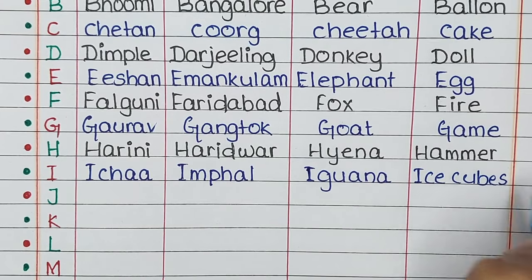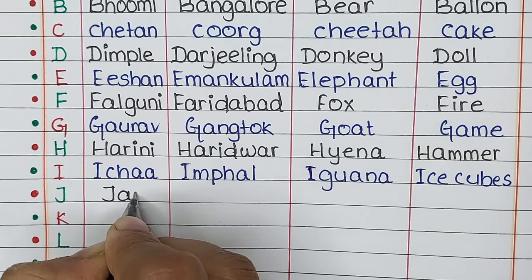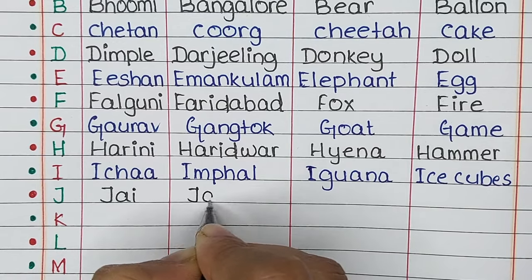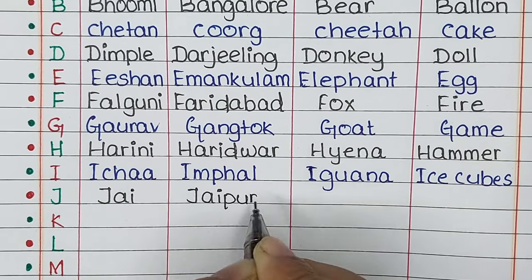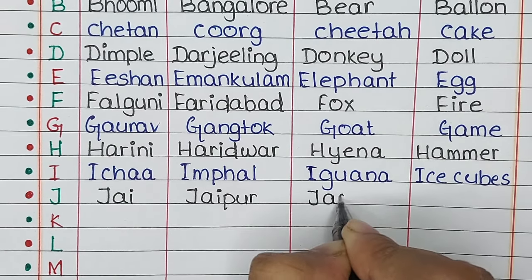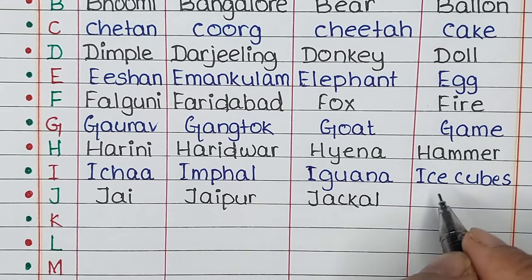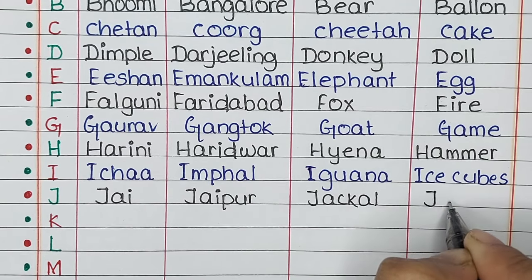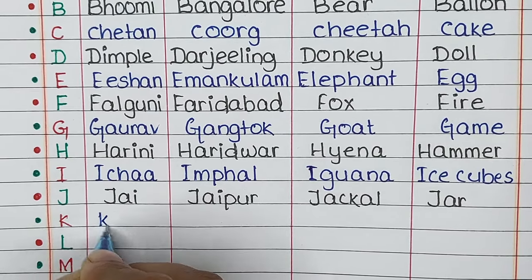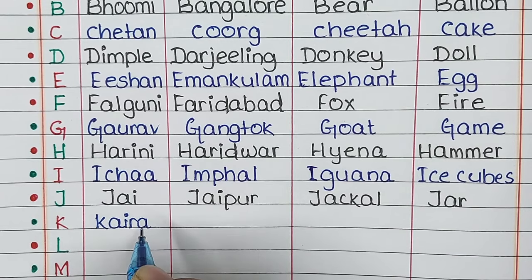Next is letter J. The name that starts with this alphabet is Jai, the place is Jaipur, the animal is Jackal, and the thing is Jar.